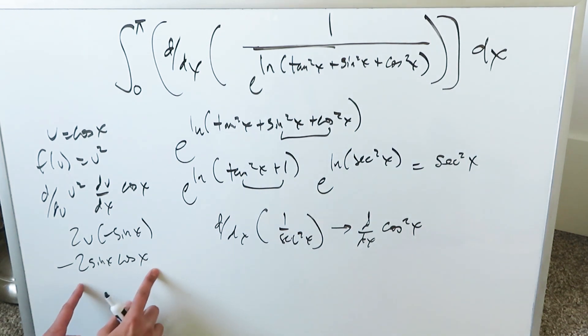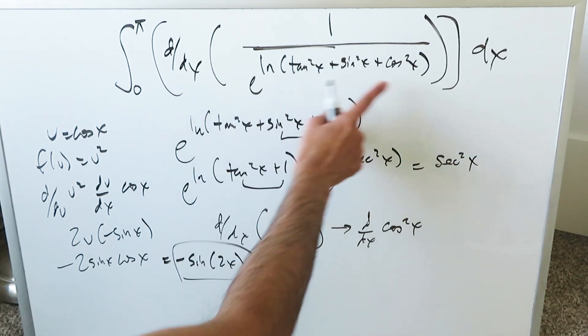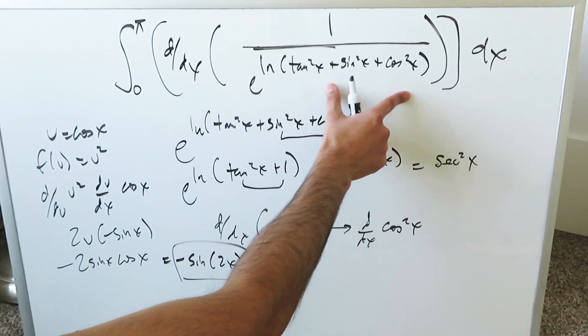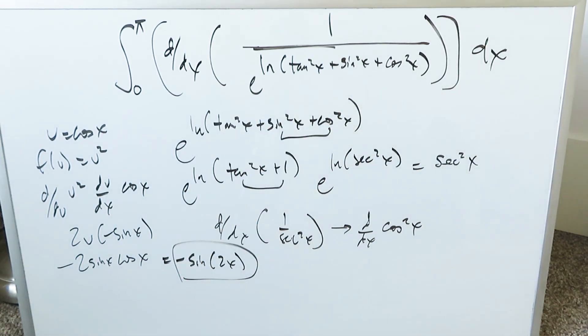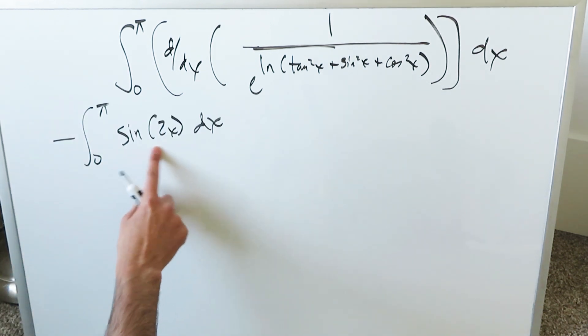Your next trigonometric identity is what this represents: a double angle formula, minus sine 2x. Now all of this expression from the derivative up to the dx as you can see represents this. That's what we're doing. We're doing an integral of—I've pushed the minus out. Now we're doing this. This is our integrand.